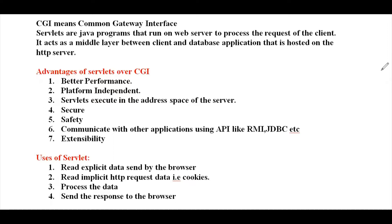What is meant by CGI? CGI stands for Common Gateway Interface and was used before servlets. The disadvantages of CGI are: if the number of clients increases, it takes more time for sending the response; for each request it starts a new process, and the web server is limited to the number of processes it can start; and it uses platform-dependent languages like C and C++.